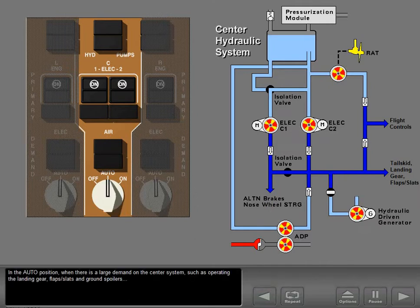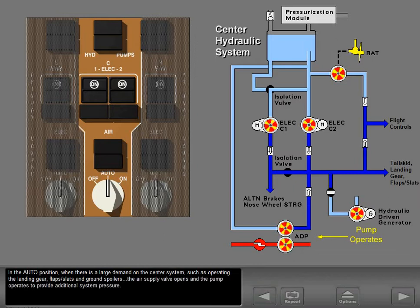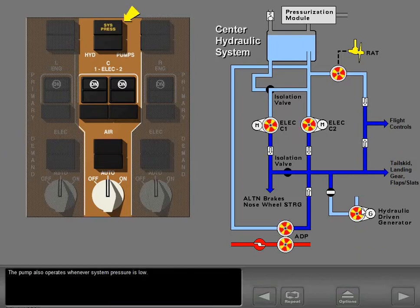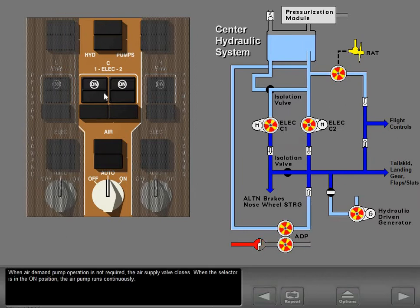In the auto position, when there is a large demand on the center system — such as operating the landing gear, flaps, slats, and ground spoilers — the air supply valve opens and the pump operates to provide additional system pressure. The pump also operates whenever system pressure is low. When air demand pump operation is not required, the air supply valve closes.